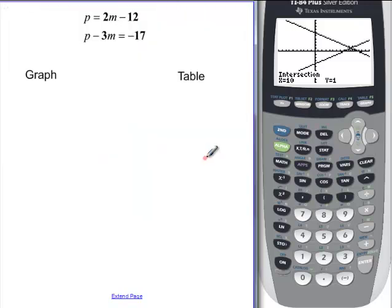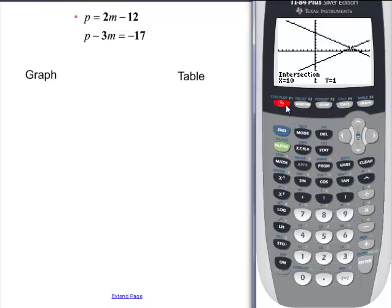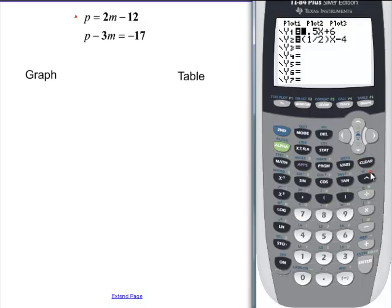And so we have another example. In this example, we're going to want to use our calculators because we don't want to have to graph it by hand. This one's great for the calculator. In fact, I can come back in here and put that one in here right away. Clear out my equation, and I can put P is equal to 2M. In our case, in the calculator, it's going to say 2X minus 12.